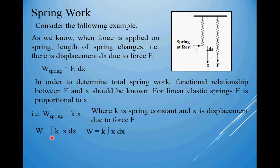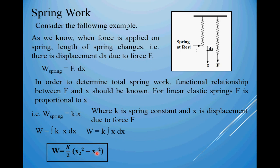The value of W will be given as the integration of Kx dx from X1 to X2. X1 is the initial length of the spring and X2 is the final length of the spring due to application of force. After integrating, we get K/2 into (X2 squared minus X1 squared), where X2 is the final length after elongation and X1 is the length before application of force. So this is the amount of spring work.